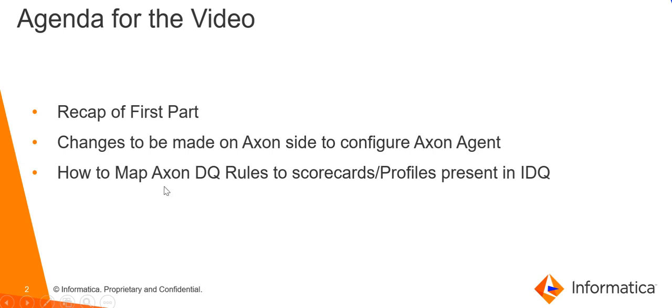Let's begin with our first topic and recap what we discussed in the first part of this video. We discussed the need for the X1 agent — it acts as a mediator between X1 and IDQ. It takes requests from X1 and sends them to IDQ, then takes the response back from IDQ and sends it back to X1, communicating with both X1 and IDQ.